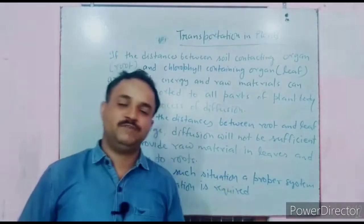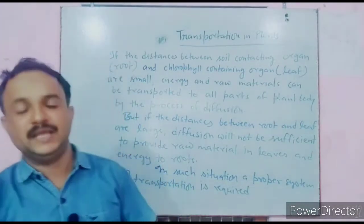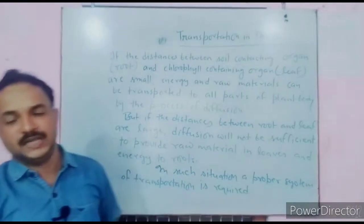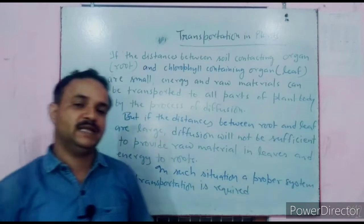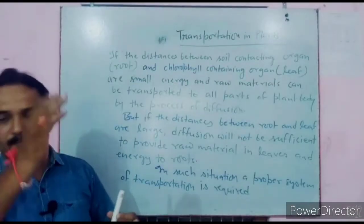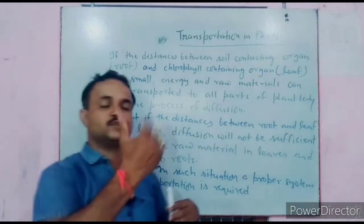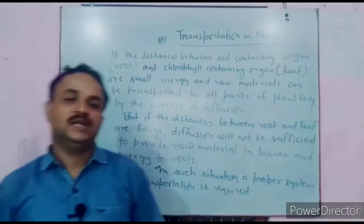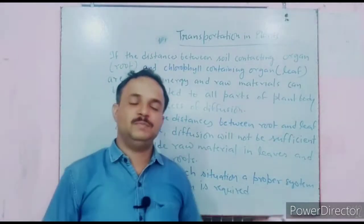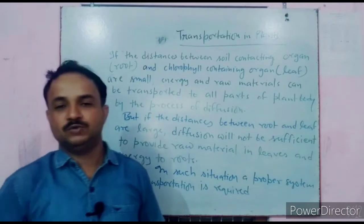In lower plants like algae and bryophytes, which lack a well-developed vascular system such as xylem and phloem, transport occurs by the process of diffusion. These plants lack true stem, root, and leaf — the plant body is called a thallus.